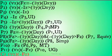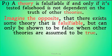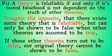Now that we've shown the argument is valid, let's see if it's sound. Our first premise: a theory is falsifiable if and only if its tested falsehood is not dependent on the truth of other theories. Let's imagine the opposite — there exists some theory that is falsifiable but can only be shown to be false when other theories are assumed to be true. This seems problematic, because if those theories turn out to be false, our original theory can't be shown to be false and is not falsifiable. So without those other theories, there's no way for it to be falsifiable.